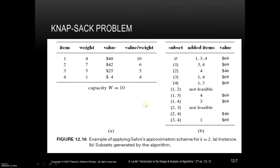We'll see this with an example. Four items are given and we are required to find the approximate solution for scheme k equal to 2. That means we generate all possible subsets of length less than or equal to 2 — the null set, {1}, {2}, {3}, {4}, and so on. The value-to-weight ratio is already arranged in descending order.